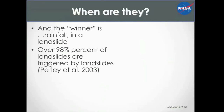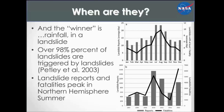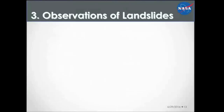When do landslides happen? Rainfall is the predominant trigger worldwide, and they tend to peak in the Northern Hemisphere summer because of the impact of typhoons, hurricanes, and predominantly the Asian monsoon. June, July, August, September — mostly July, August, September — are peak months for landslide activity. We're actually just entering the higher point of the landslide season now.